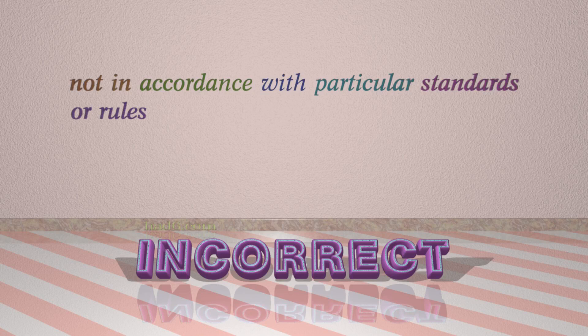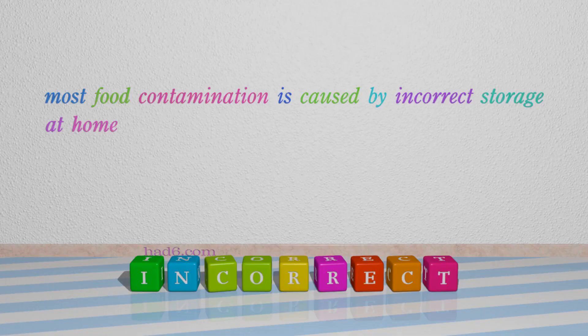Number 6: Incorrect. Which means: not in accordance with particular standards or rules. For example: Most food contamination is caused by incorrect storage at home.